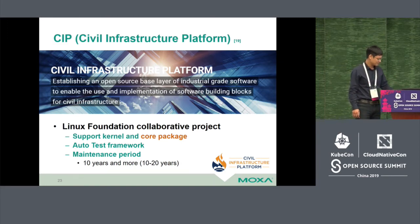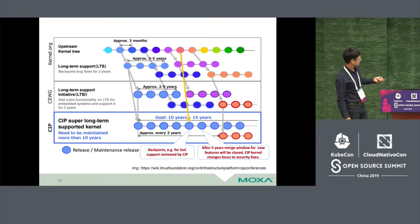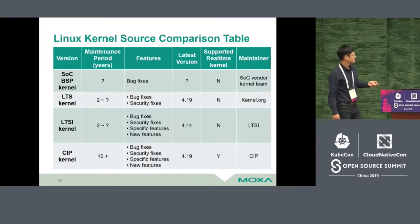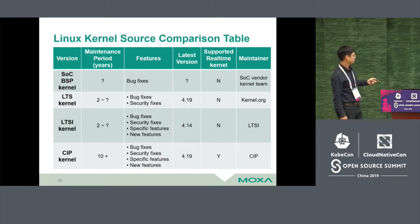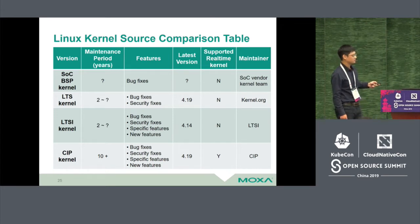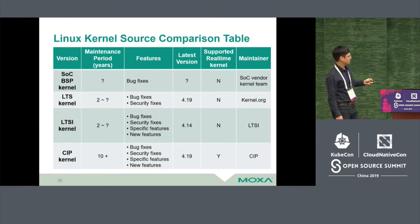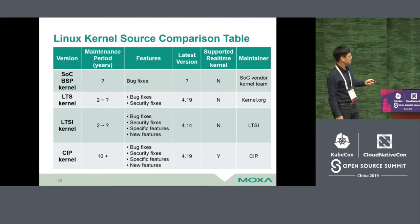Here is a figure showing the relationship between Linux kernel, LTSI, and CIP. In the comparison table, the maintenance period for SoC vendor is unknown; LTS is 2+ years; LTSI is 2+ years; and the CIP kernel is 10+ years. For features, SoC BSP and LTS accept only bug fixes and security fixes, but LTSI accepts new features, as does CIP. The latest LTS kernel is 4.19, CIP is also 4.19, but LTSI is 4.14. Importantly, only the CIP kernel supports the real-time kernel.